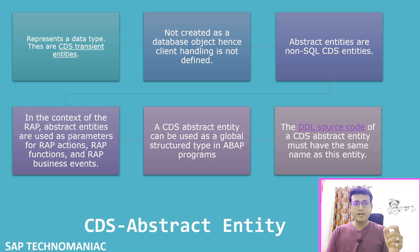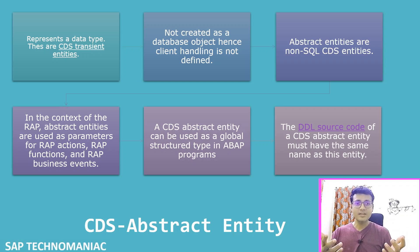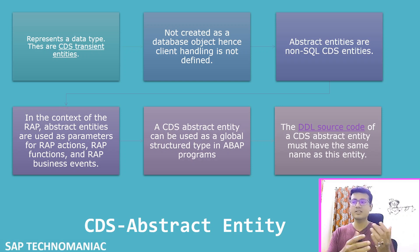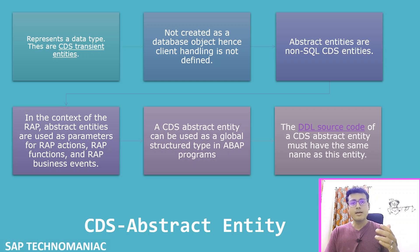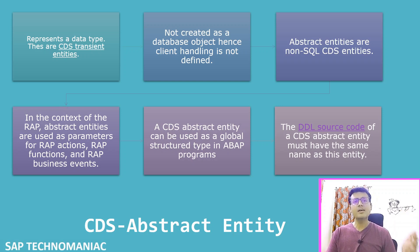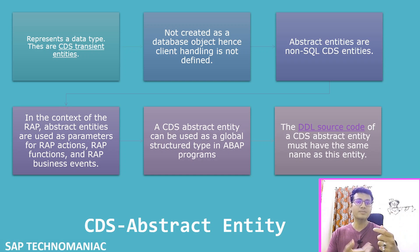CDS abstract entity is another kind of CDS view, which is like a structure. You might ask: if we already have a structure, why do we need this? In a normal structure you can define normal fields, but in RAP, if you want to define special fields like %TKY or %PK, those kinds of fields are not possible in a normal structure.